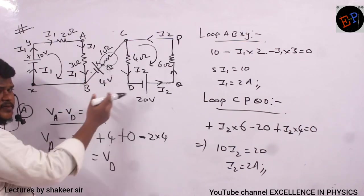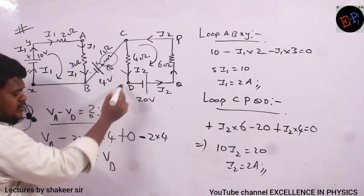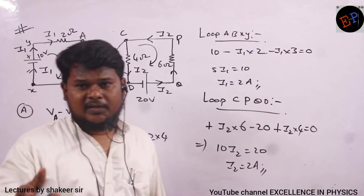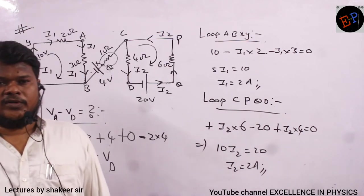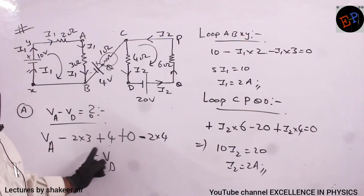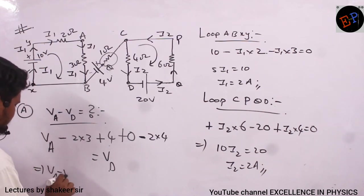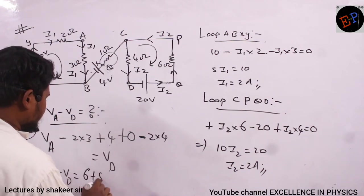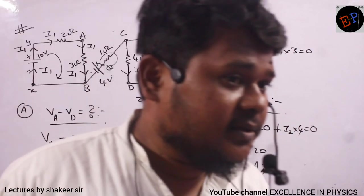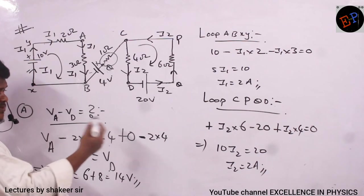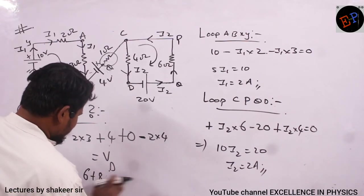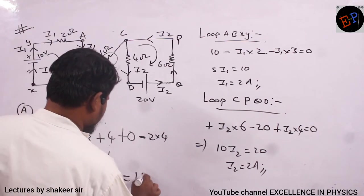Calculating VA − VD: VA − 2×3 + 4 − 2×4 = VD, giving VA − 6 + 4 − 8 = VD, so VA − VD = 6 − 4 + 8 = 10 volts. The potential difference between point A and point D is 10 volts.